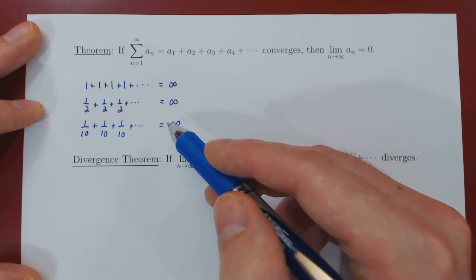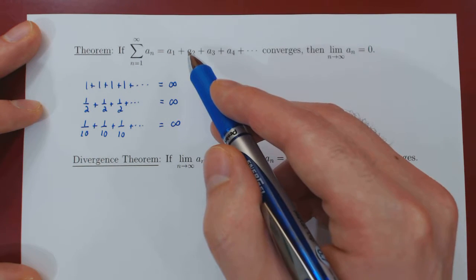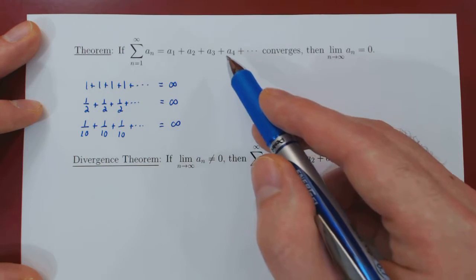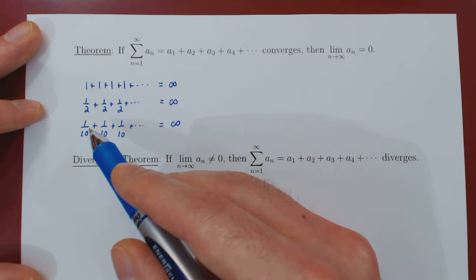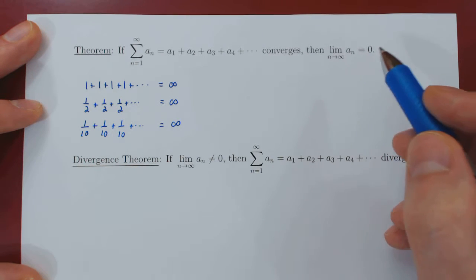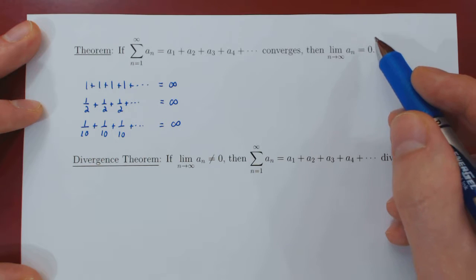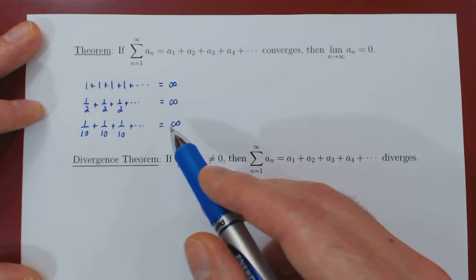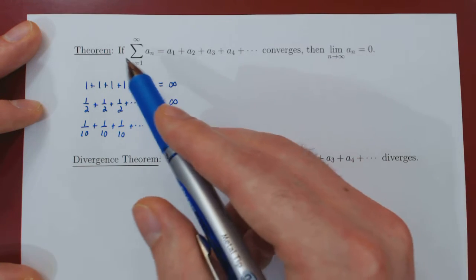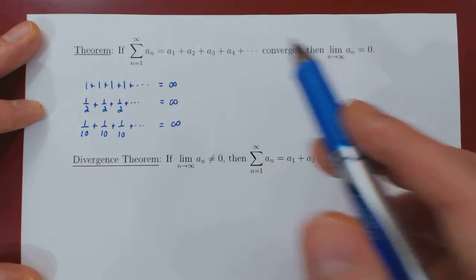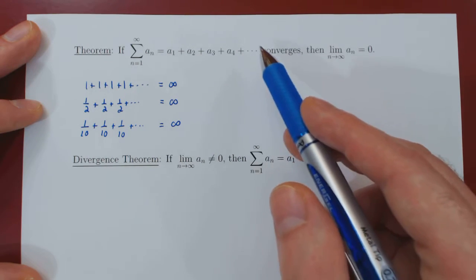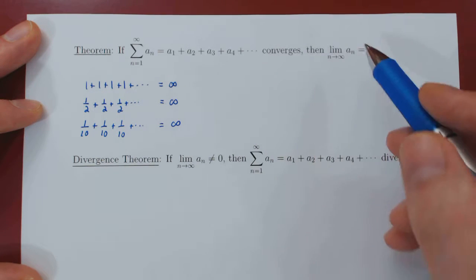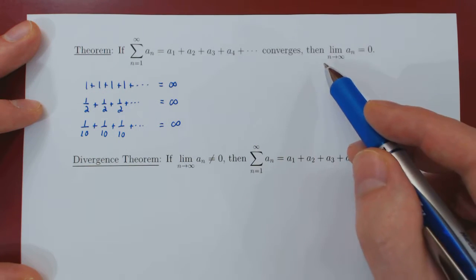So it only seems possible that we can add infinitely many terms if the terms are getting smaller and smaller and smaller — they have to be shrinking to 0. Anything but 0, the numbers are a little too big, and the result of the series will be infinity. To summarize: we can only add infinitely many real numbers if they shrink to 0 as n tends to infinity.